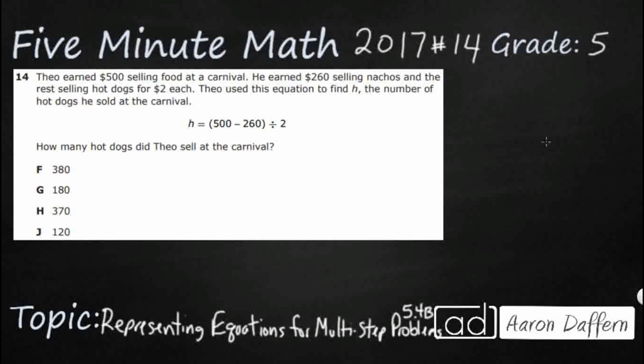So, Theo is earning $500 selling food, so this food is just a large category here. Part of it is for selling nachos, and the rest is for selling hot dogs for $2 each. And then he used this equation, which they've given us right down here, to find the number of hot dogs he sold at the carnival.